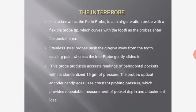The Inter probe, also known as the Periprobe, is a third generation probe with a flexible probe tip that curves with the tooth as it enters the pocket area. Unlike stainless steel probes that push the gingiva away causing pain, the Inter probe gently slides in. It produces accurate readings of periodontal pockets with standardized 15 grams of pressure. Its optical encoder uses constant probing pressure to provide repeatable measurements of pocket depth and attachment loss.